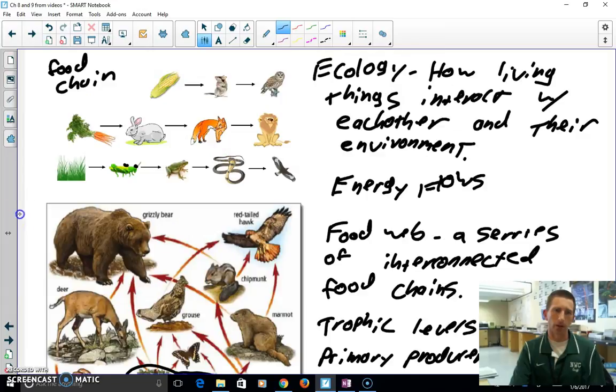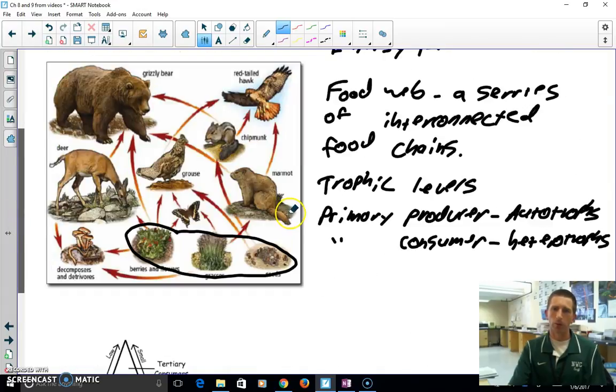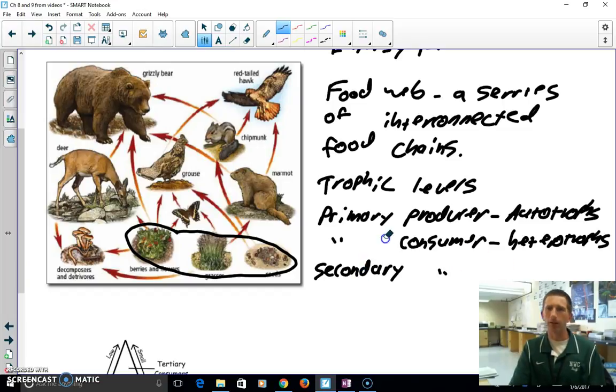All right? So then the next level up, not primary consumers, but secondary consumers. Secondary consumers, still heterotrophs, and these are things that eat the primary consumers. So if the bear eats the deer, which eats the berries, the bear is a primary, or sorry, a secondary consumer.